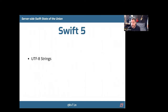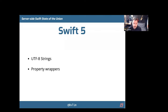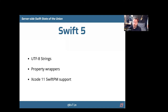Swift 5 brought UTF-8 strings — before Swift 5 all strings were UTF-16. The core team made the decision to switch strings to be UTF-8 under the hood, which is a huge performance boost for the server because everything on the server is UTF-8. We also had property wrappers, which are used in Vapor for database queries — your model is defined using property wrappers. And Xcode 11 brought along support for Swift Package Manager. Before this you had to generate an Xcode project and it was a bit of a hack. Since then, Xcode 11 has proper built-in support, and you can also write Swift on other IDEs now as well.